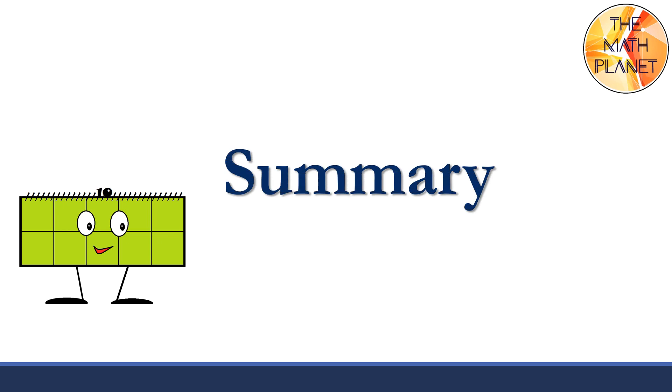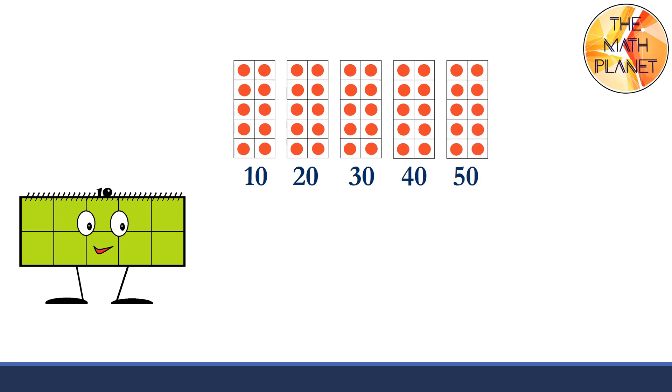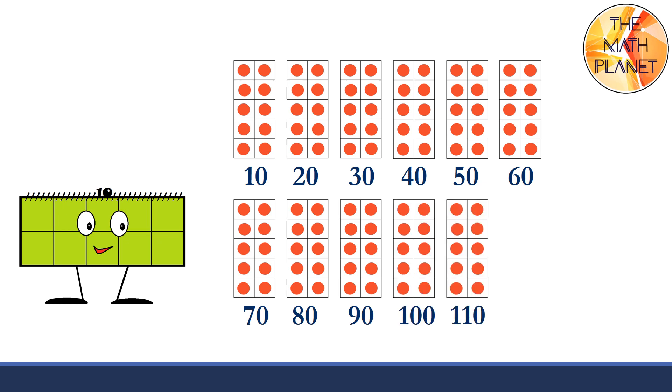Let's sum up today's lesson. Today, we learned to count by tens. Ten, twenty, thirty, forty, fifty, sixty, seventy, eighty, ninety, one hundred, one hundred ten, one hundred twenty.